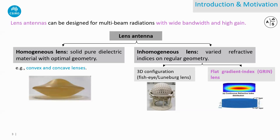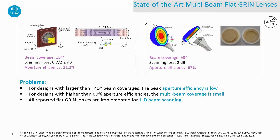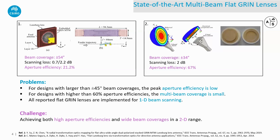Particularly, flat gradient index lens, which has varied refractive indices on a flat geometry, is very attractive due to its advantages of low-cost fabrication and easy implementation on practical platforms. However, for state-of-the-art multi-beam flat GRIN lenses, it's still challenging to achieve both high aperture efficiencies and wide beam coverages in a 2D scanning range.